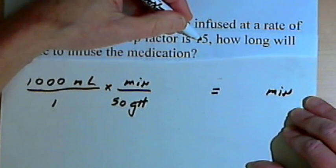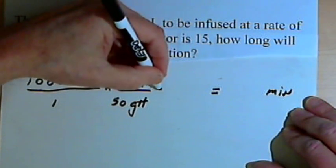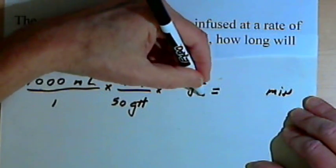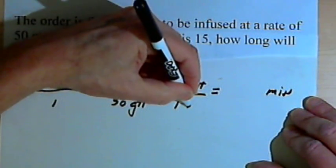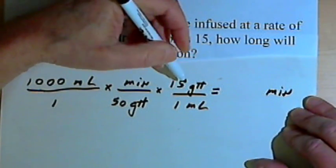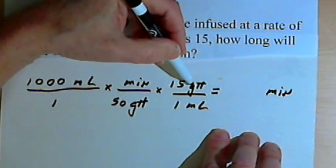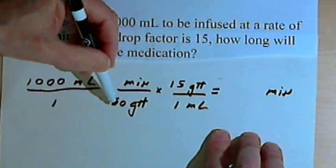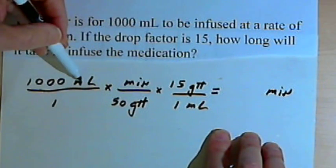And the last thing I know is that the drop factor is 15. So that's like 15 gtt over 1 milliliter, or 15 drops. So here's 15 gtt over 1 milliliter. This time I want the drops in the numerator, so I can cancel out the ones I've got in the denominator over here, and also be able to cancel out the milliliters. So let's cancel those units.